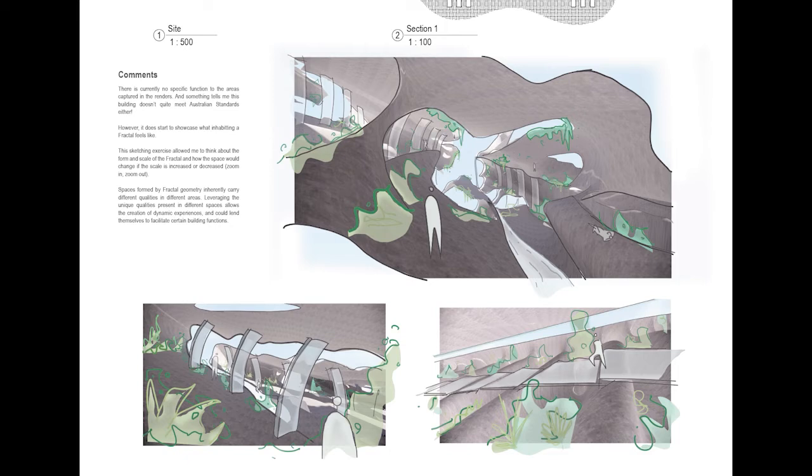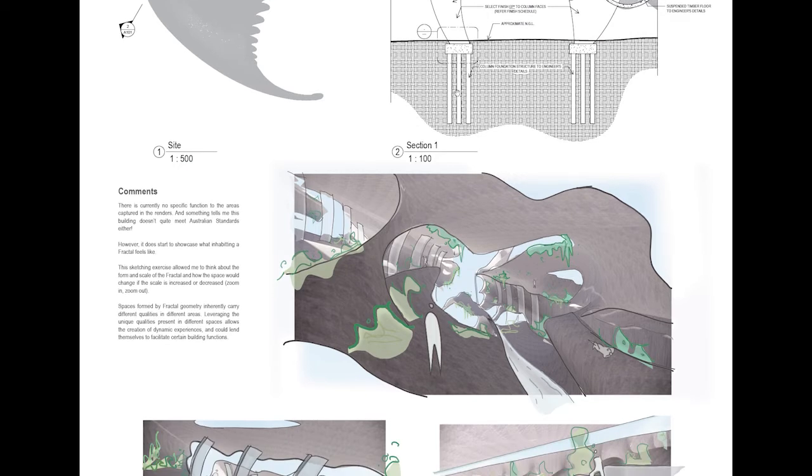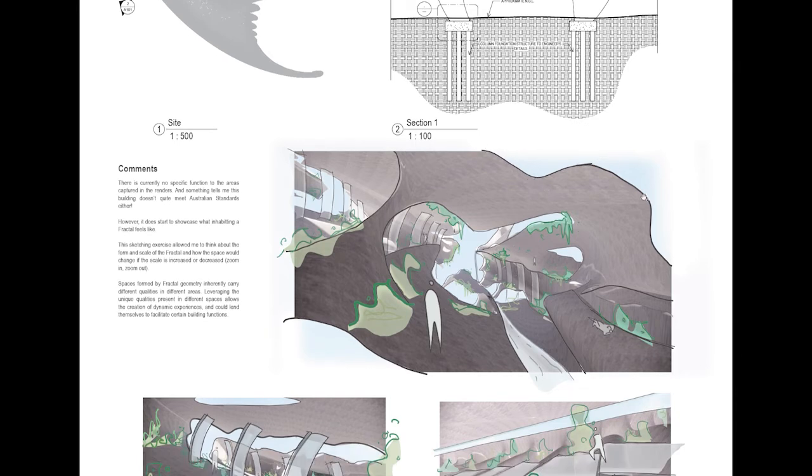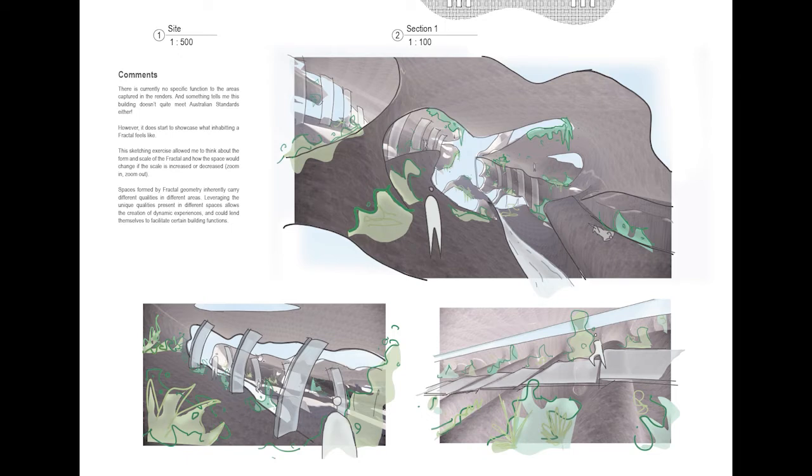None of this is to Australian standards or anything, and I will let Boone decide to what extent we should be detailing and developing our design to meet Australian standards, because it could become tricky with some of these very sloping and organic forms. But who knows, maybe there are clever ways to work around it and make it all work even from a feasibility perspective. We can start to see here some of these columns continuing through into this upper space of the shell of the fractal, people standing here. The integration of nature within the fractal was really interesting to explore.